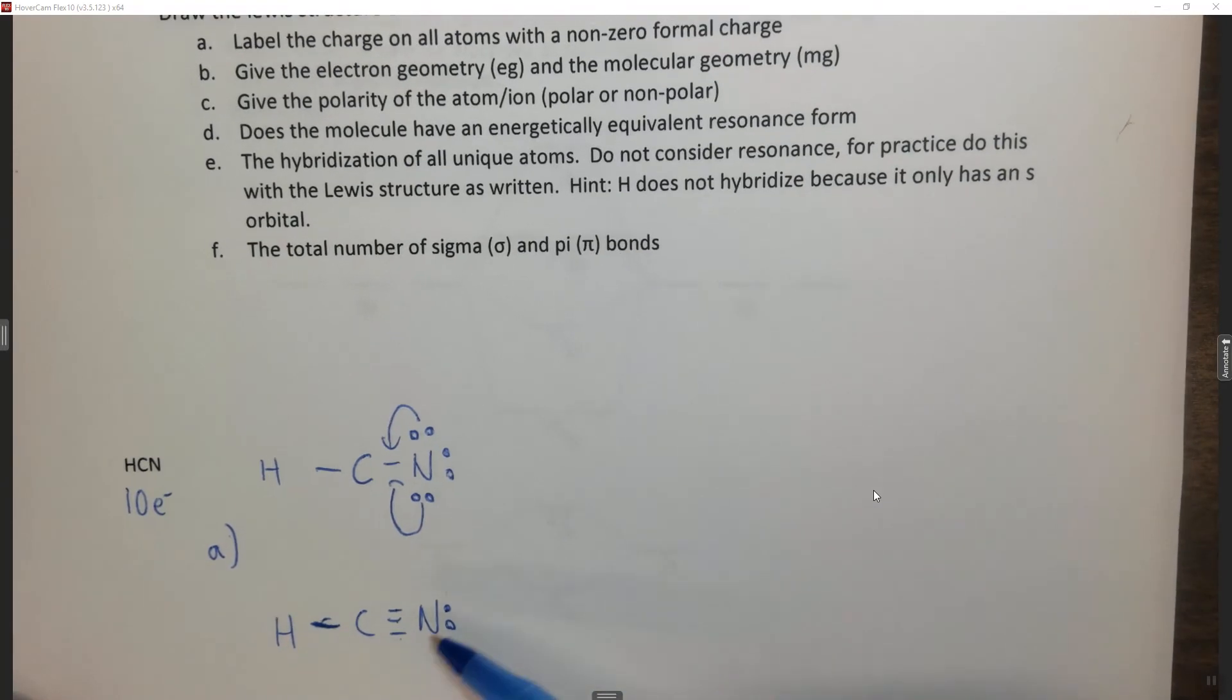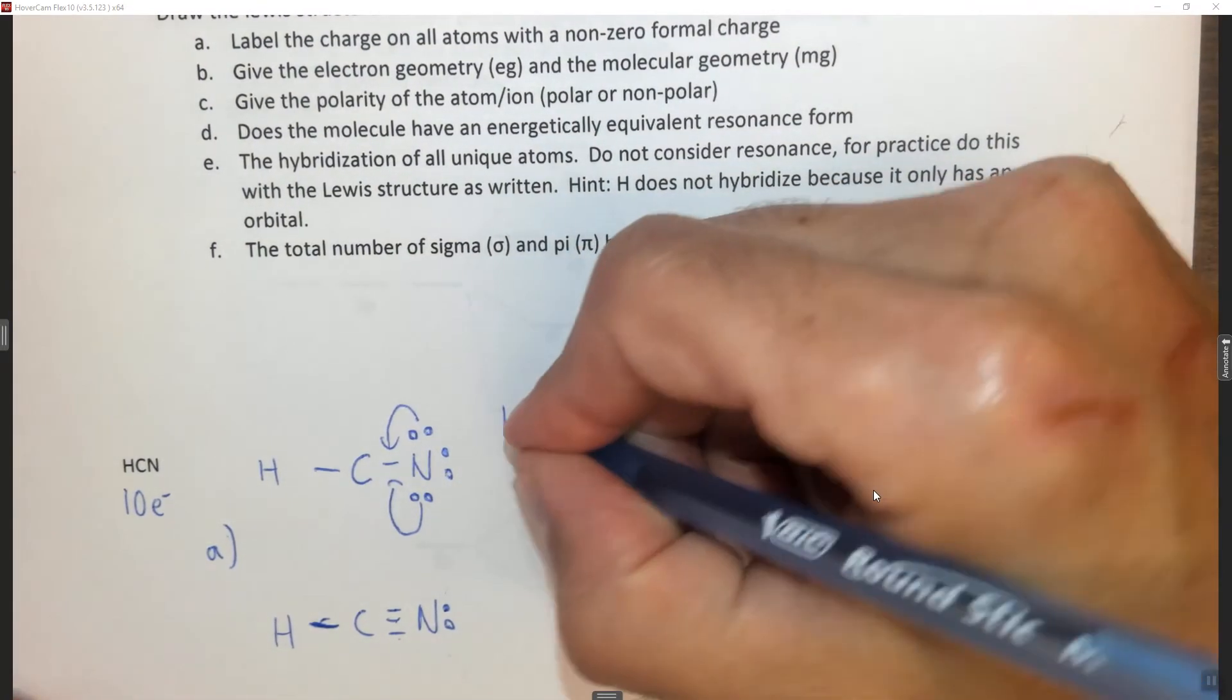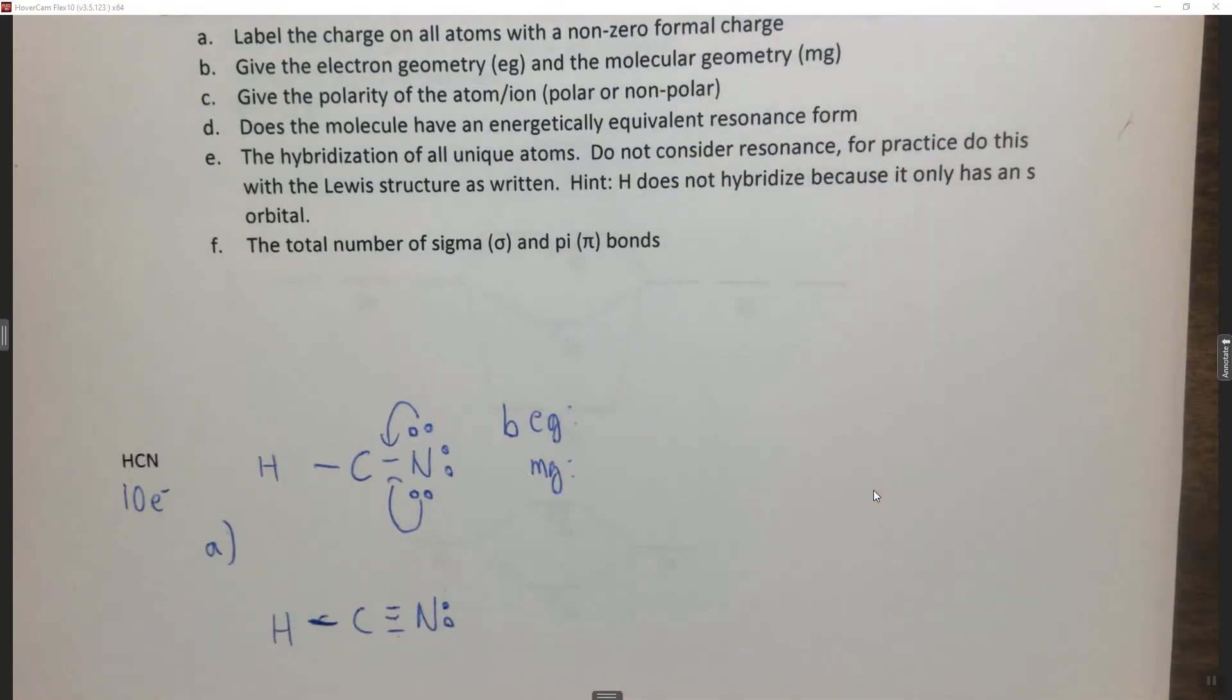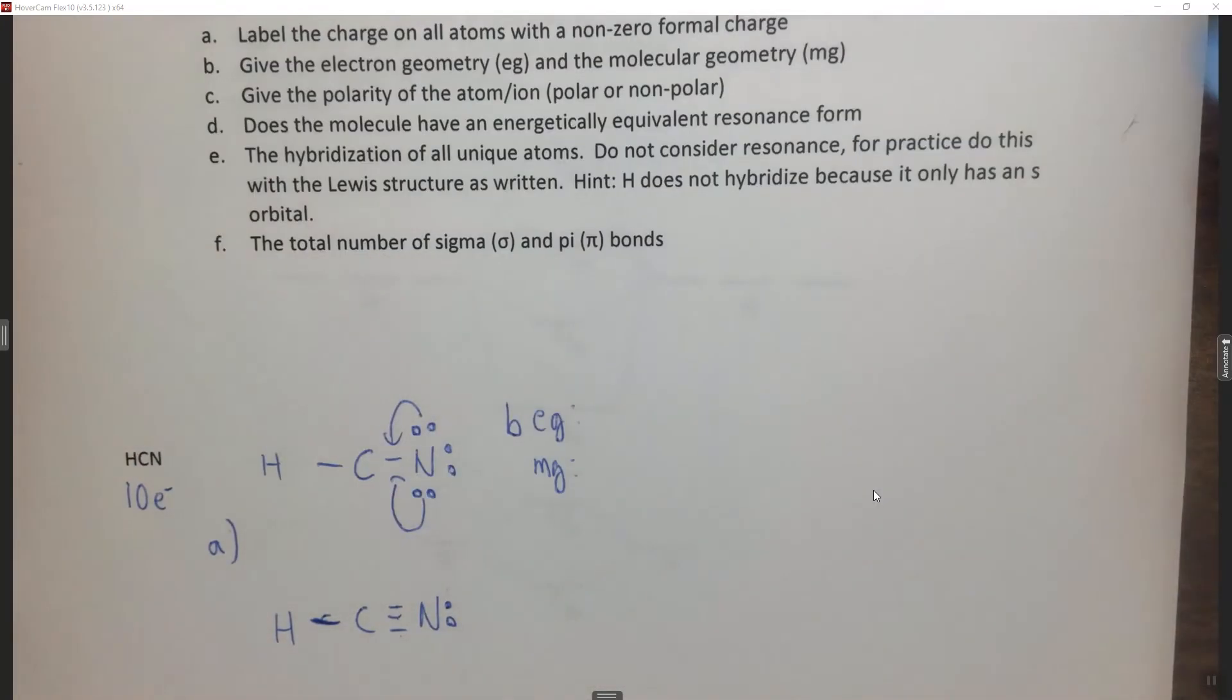Alright, in previous videos I would have spent 5 to 10 minutes going over how to do that, but here I'm going through it relatively quickly. Alright, so B. We want to give the electron geometry and the molecular geometry of HCN. To do that we want to use our cheat sheet here that we have that can tell us this.